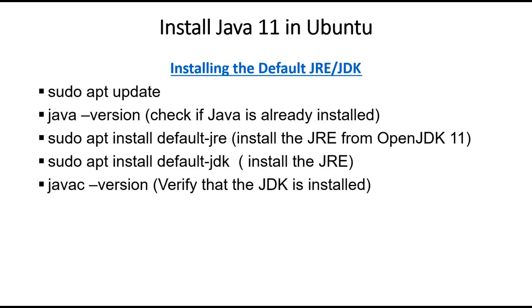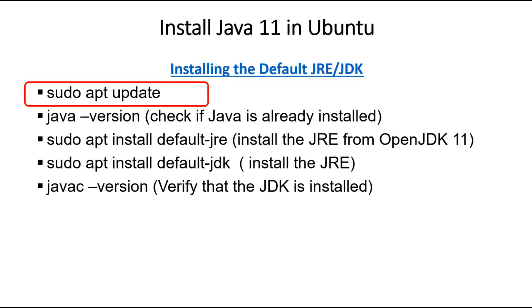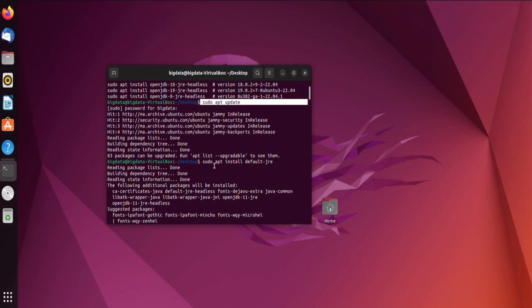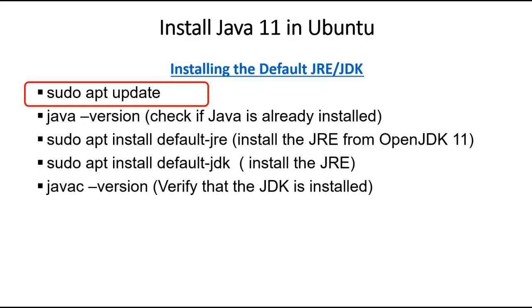We will follow the following steps in this tutorial. Let's start with the first step: open your terminal and type sudo apt update. This command updates the package list to ensure we have the latest information about available packages.